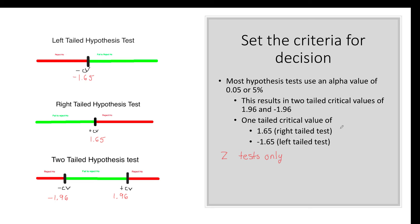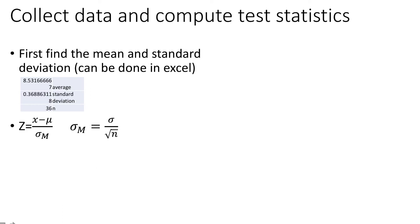Right-tailed tests have an alternative hypothesis of greater than. Left-tailed tests have an alternative hypothesis of less than. We will come back to those critical values.